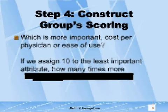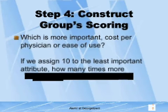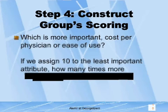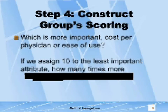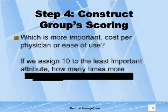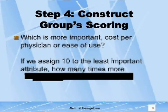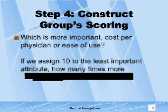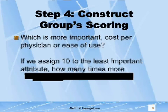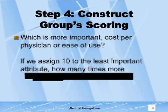In this step, the analyst helps the group create a scoring procedure reflecting their preferences. Attribute levels are rated and the relative importance of each attribute is established. The analyst lists questions on separate sheets of paper and asks each participant to respond individually. For example, if assessing the relative importance of cost per physician and ease of use, the following two questions are asked: Which is more important, cost per physician or ease of use? If we assign 10 to the least important attribute, how many times more important is the other? The responses are used to assign relative weights to each attribute. Details of how to do so are provided in a separate set of slides.